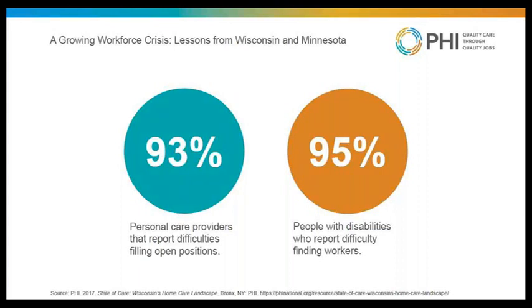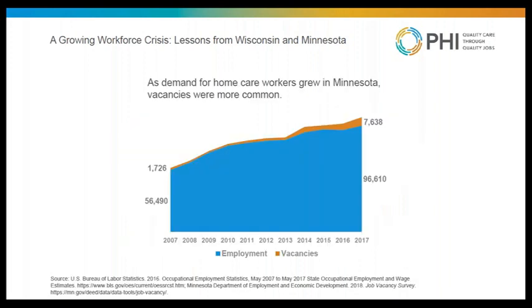Tight competition for workers poses a huge challenge for rural home care employers. Survey results from two diverse coalitions in Wisconsin demonstrate how the workforce shortage impacts employers and consumers — most employers can't find workers and consumers experience gaps in services. In Minnesota, we can quantify the workforce shortage in more certain terms because the state labor department administers a survey to measure job vacancies in all occupations. Combining employment and vacancy data for personal care aides and home health aides, the evidence is clear that as demand for services increased over the past decade, so did job vacancies. So we're already in crisis.